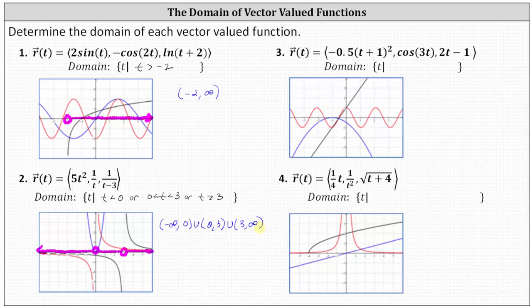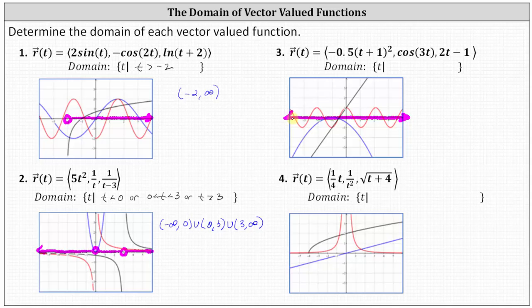For number three, we have x of t graphed in blue, which is a parabola — the domain is all reals. We have y of t equals cosine three t graphed in red — again the domain is all reals. And z of t equals two t minus one graphed in black — once again the domain is all reals. Because the domain of each component is all reals, the domain of the vector-valued function is also all reals. The graph of the domain would be the entire t-axis, which is all real numbers.